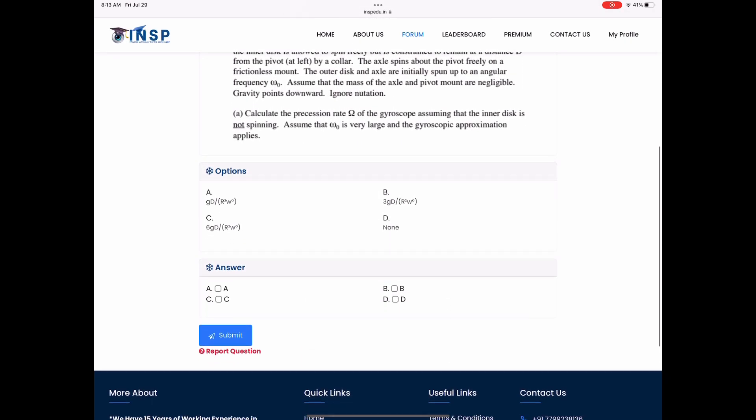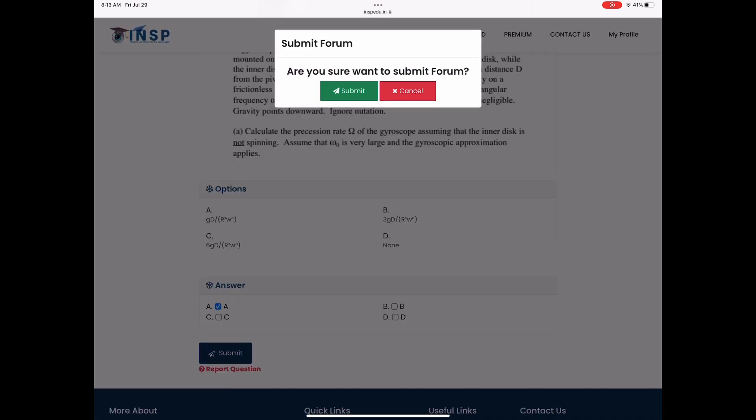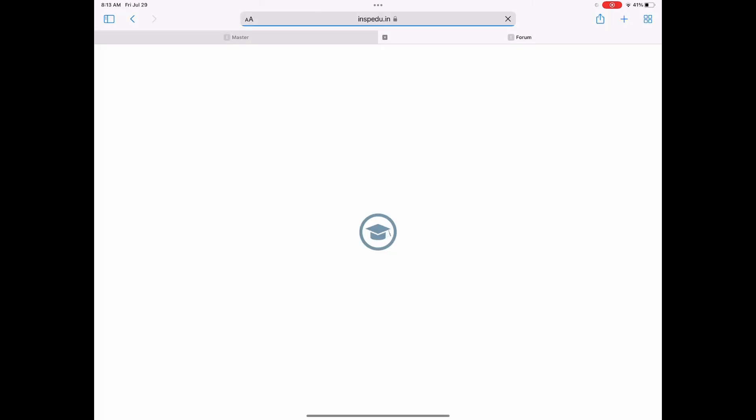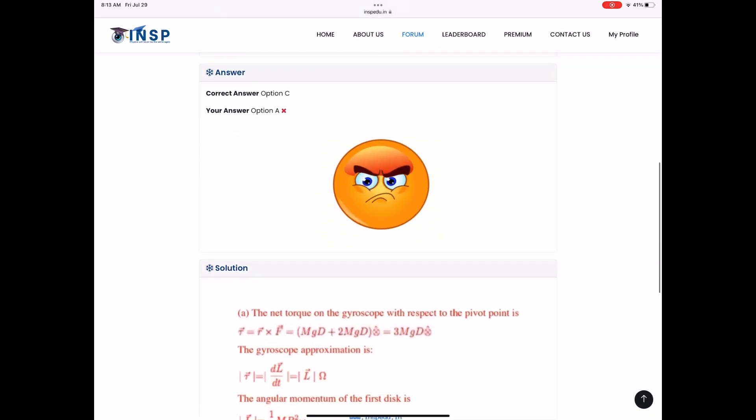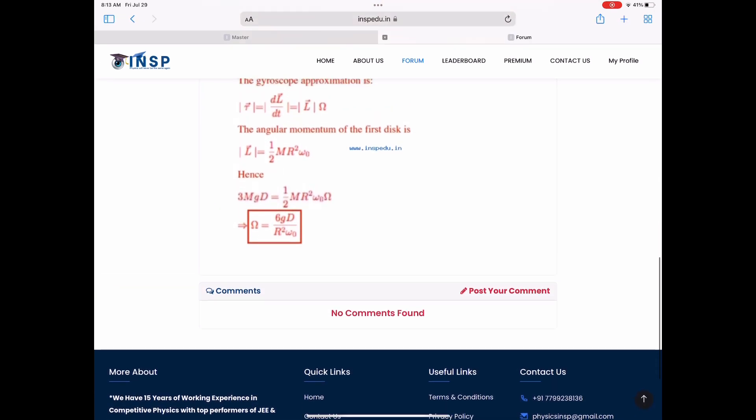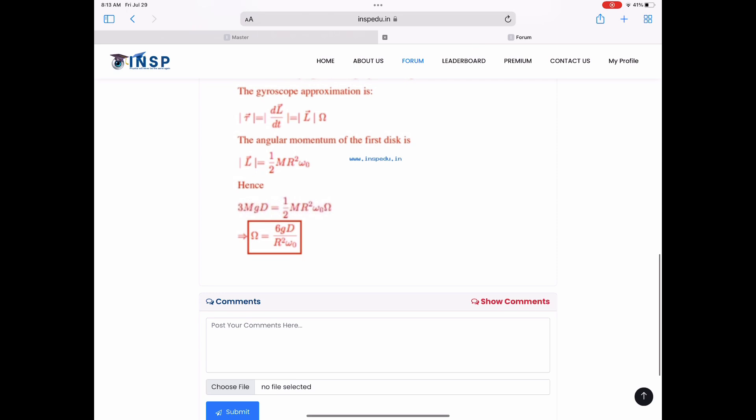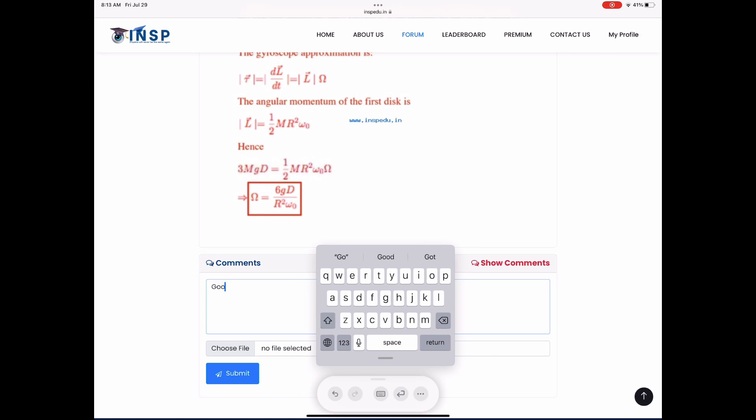You can click on the problem, see the problem and four options, and attempt. You can submit your response and based on whether it is right or wrong you will be getting marks, rating points accordingly, and solutions will be available. This forum part will be completely free.